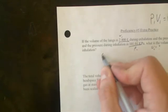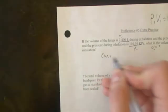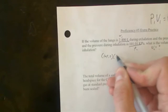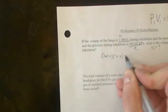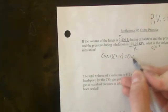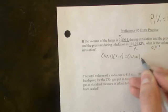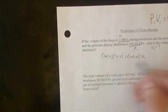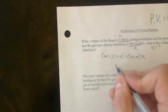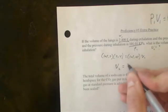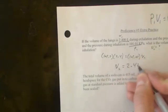So 101.7 times 2.4 equals 101.01 times V2. Go ahead and do that algebra, and you'll find out that your volume should be about 2.42 liters.